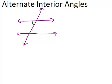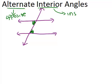As you can see, these two angles are on opposite sides of the transversal and on the inside of the lines — that's why they're called alternate interior angles. Alternate is sort of like opposite; they're on opposite sides of the transversal, and interior means inside the lines. The other pair of alternate interior angles in this picture is right here.